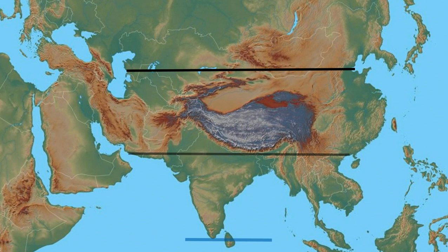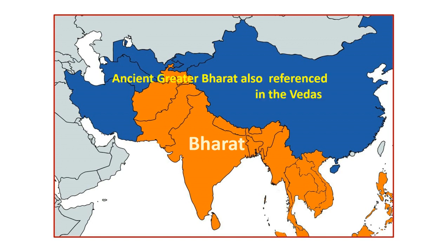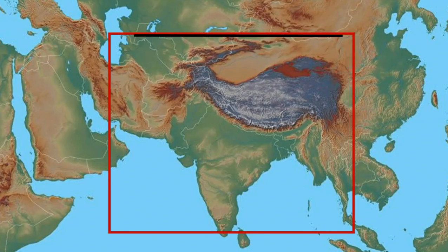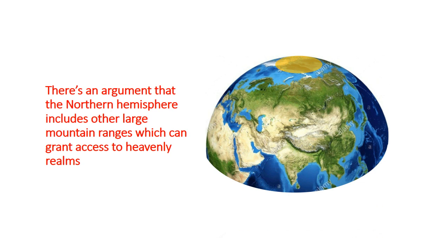Above the Himalayas, the Hemakuta line encapsulates all the mountains and much of Asia. Note in orange the traditional Bharat — the ancient cultural influence of India — and at the top, ancient Greater Bharat, also referenced in the Vedas. You've got almost north and south halves of Greater Bharat, which was a great ancient empire. Introducing the nine khandas, regions of Bharat Varsh, as mentioned in the Markandeya Purana and referenced in the Bhagavatam. There's an argument that the Northern Hemisphere includes other large mountain ranges which can grant access to heavenly realms.